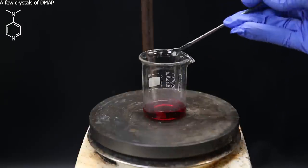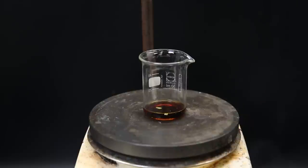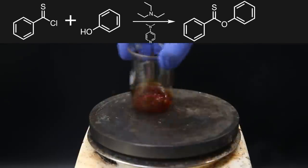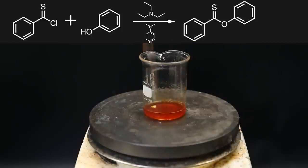Then as the final ingredient, which will catalyze this reaction, a little bit of DMAP. Within a few minutes, the mixture turns orange. In the reaction, thiobenzoyl chloride will react with phenol, to form the corresponding thionoester, which can be purified by column chromatography.